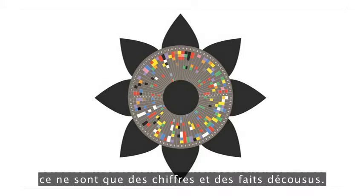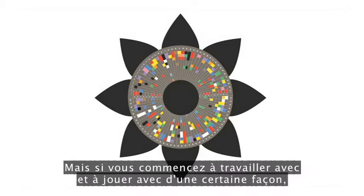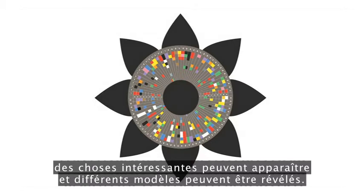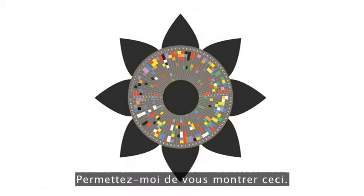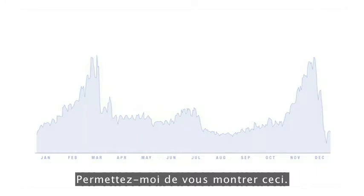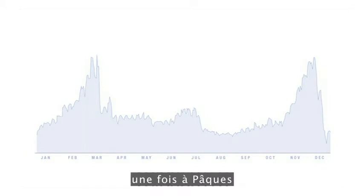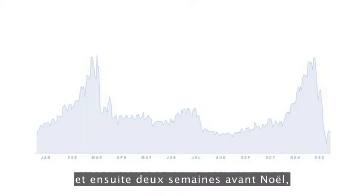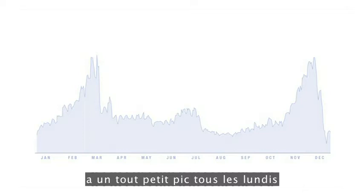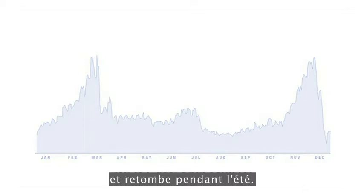But if you look at it directly, it's just a load of numbers and disconnected facts. But if you start working with it and playing with it in a certain way, interesting things can appear, and different patterns can be revealed. Can you guess what this data set is? What rises twice a year, once at Easter and then two weeks before Christmas, has a mini peak every Monday, and then flattens out over the summer?